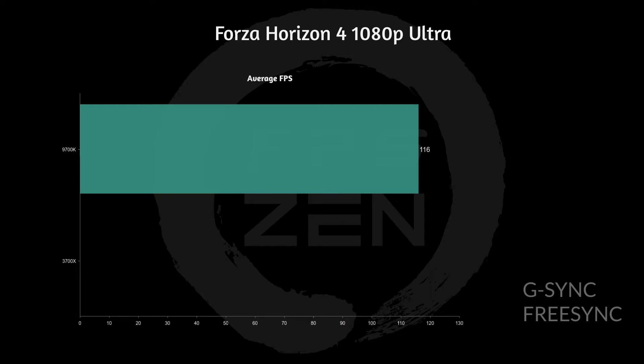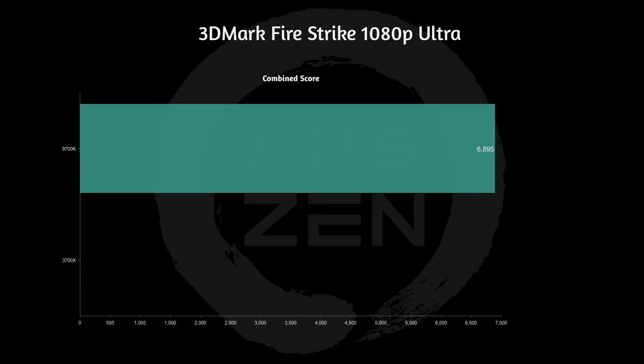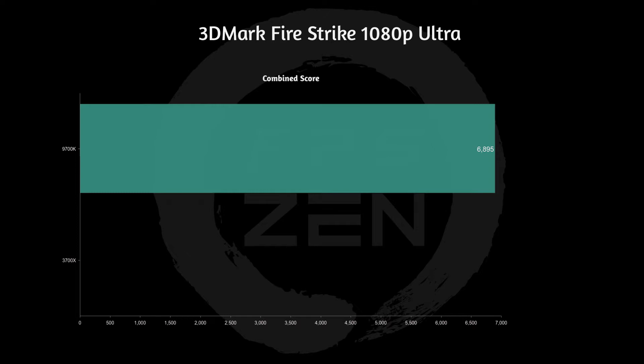In Forza Horizon 4 at 1080p ultra settings, we got an average of 116 FPS — a great title for G-Sync or FreeSync. In 3DMark Fire Strike at 1080p, the score was 6,895. In 3DMark Time Spy Extreme, the score was 4,211 points.